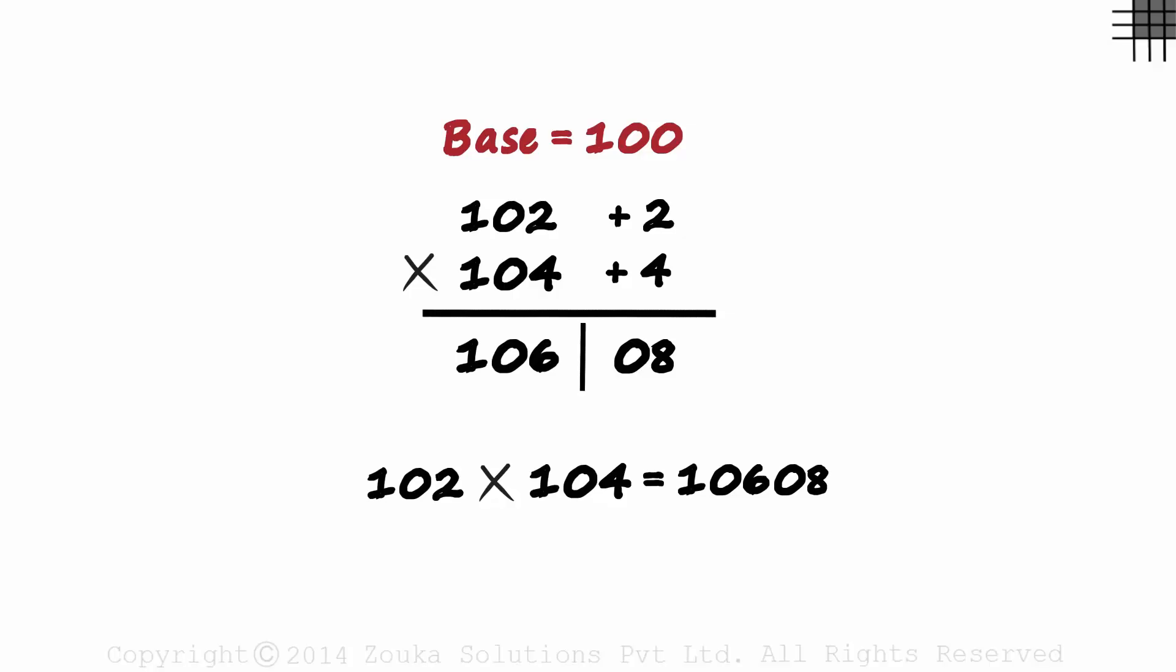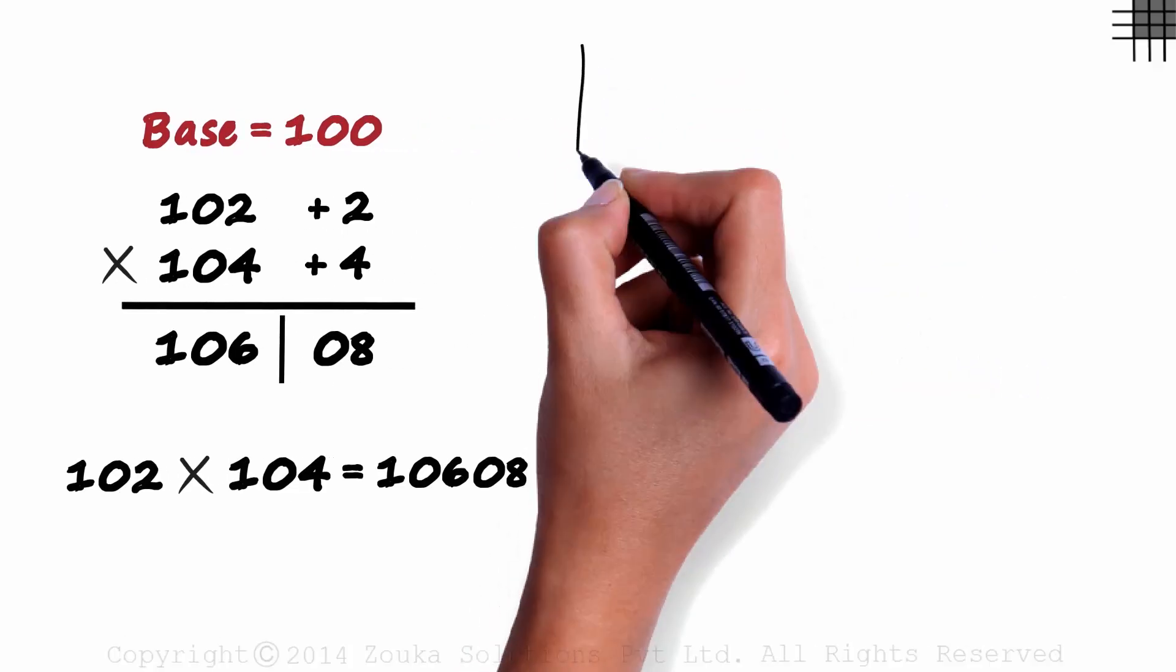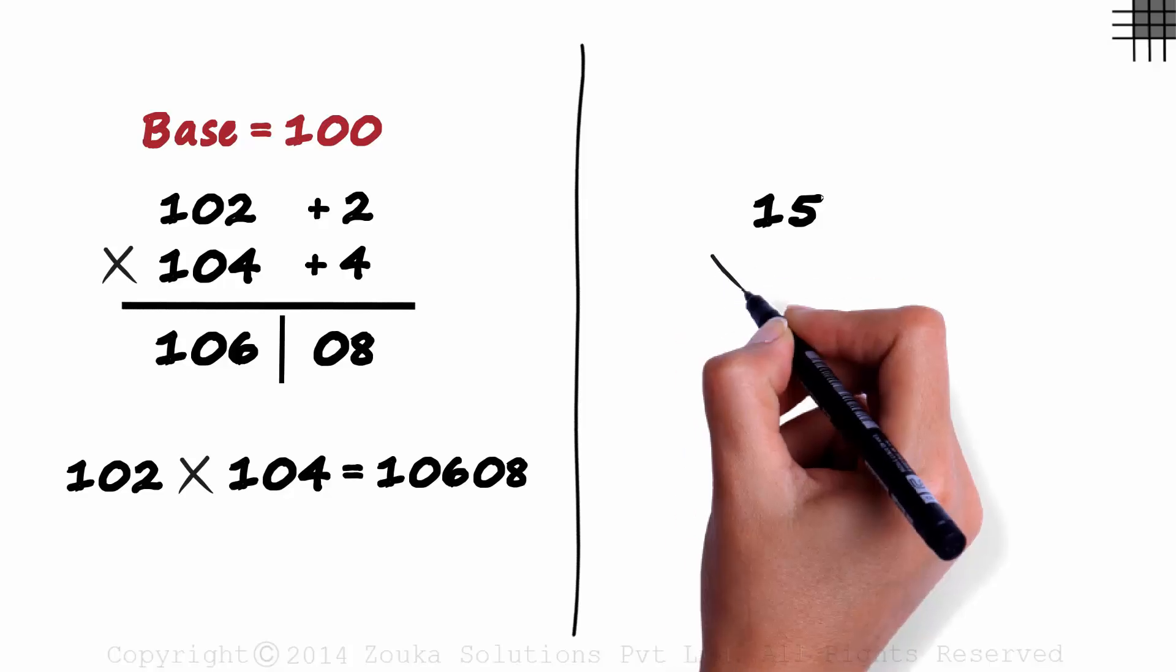You have to realize how simple this technique is. Just four simple steps. Base, deviations, sum and product. That's it. Why don't you try another one? Take a simpler one this time. 15 times 19.